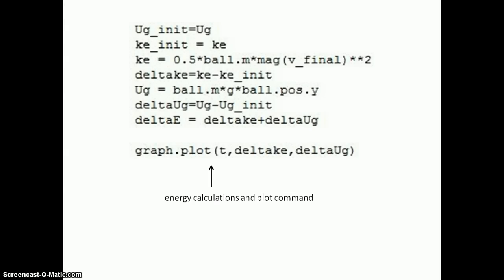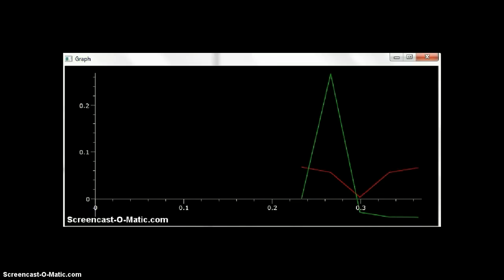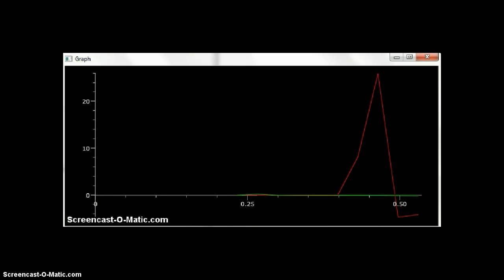Here are the energy calculations for the entire video. A plot command is called to show a graph of the data, seen here. As you can see, the energy remains relatively constant in the beginning with gravitational potential energy changing slightly. However, the moment of impact is clear when there is a sudden spike in kinetic energy, shown in red.